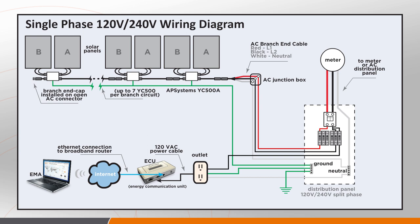This is a simplified typical residential single-phase system diagram for the YC500A microinverter. The YC500 is assigned to two PV modules, typically described as side A and side B. When hooking up the AC cabling, there are three conductors: the red L1, the black L2, and the neutral, which is used in the PLC communication with the ECU. A quick word on ECU placement: the ECU is plugged into a standard 120-volt outlet, and you want to get it installed as close electrically as possible to the array to eliminate as many communication problems as possible.